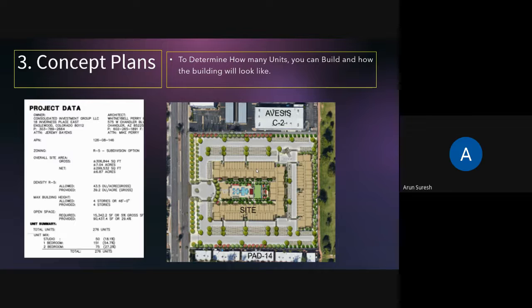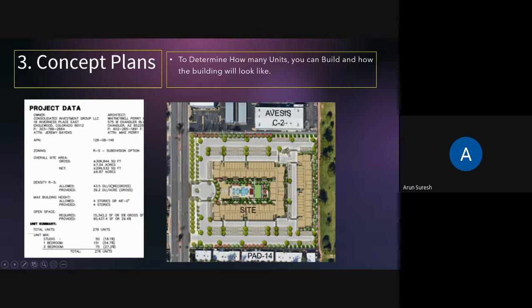As shown on the left, the architect provided instructions that the zoning for this piece of land was R5 — R stands for residential zoning, so it was zoned for building apartments. The land was 7.04 acres. Density is how many apartments you can build per acre. Per the zoning code, you can build 43.5 apartments per acre, and we ended up with 276 units. You also have to look at restrictions like how many stories or floors you can build — there was a four-story limit and 48-foot height maximum. Based on all these metrics, the architect determined we could build 276 apartments.